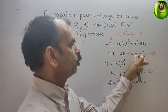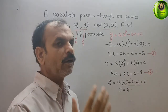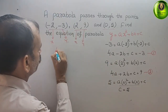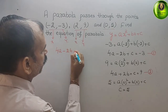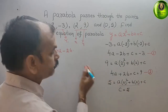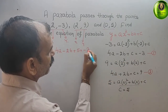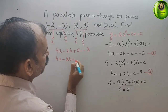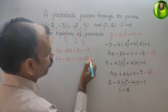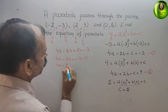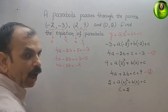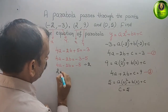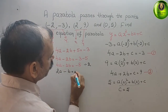Now substitute c = 5 into both equations. From the first equation: 4a - 2b + 5 = -3. Solving: 4a - 2b = -8. Dividing all terms by 2, we get 2a - b = -4.